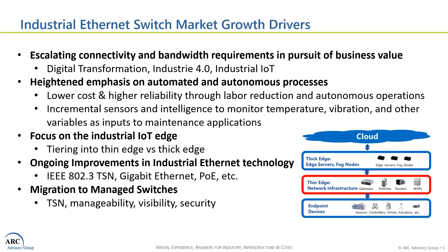We also see overall a heightened emphasis on automated and even autonomous processes. We are pursuing lower costs and higher reliability through labor reductions and autonomous operations. We're adding incremental sensors and intelligence in areas like temperature, vibration, and other variables as inputs to fine-tune both operations and maintenance applications. Industrial Ethernet switches also benefit from the focus on the industrial IoT edge, and these switches reside firmly on the thin edge at the connectivity layer, where connectivity requirements are certainly increasing.